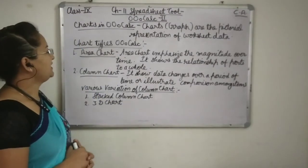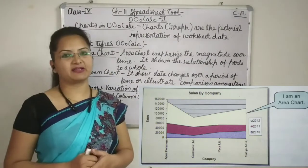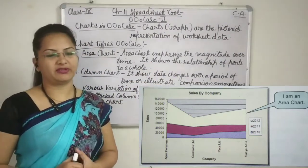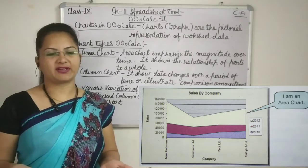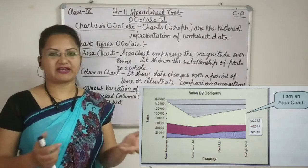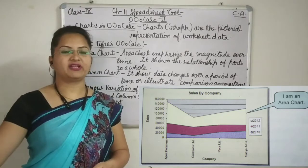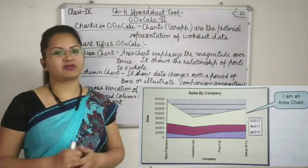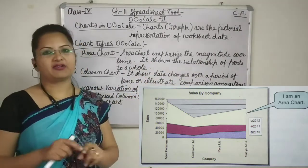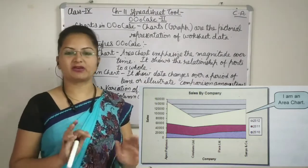First of all in chart types we will study about area chart. Area chart actually emphasizes the magnitude over time and it shows the relationship of the part of a whole. Like if we have some values like x-y coordinates then we plot it on the graph. Then if we join it with a line and cover that area with a particular color then it becomes an area chart. It will actually show the part of a whole — out of the whole, some part will be covered by the particular data series.